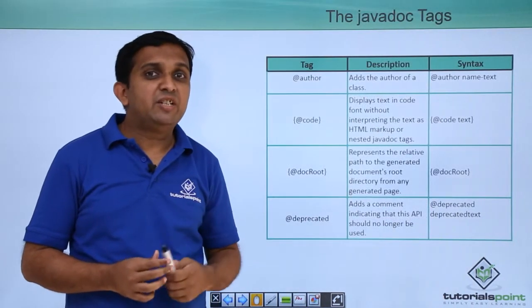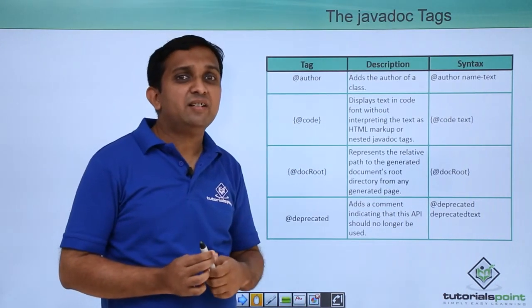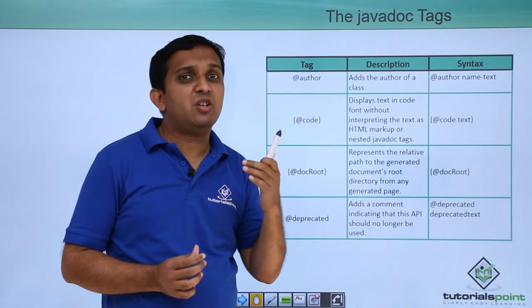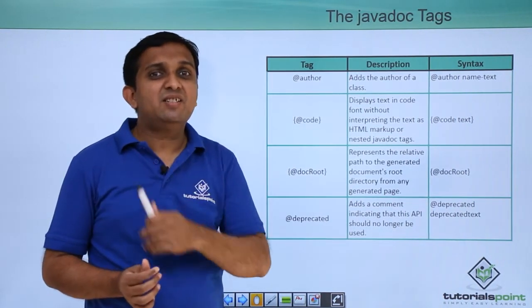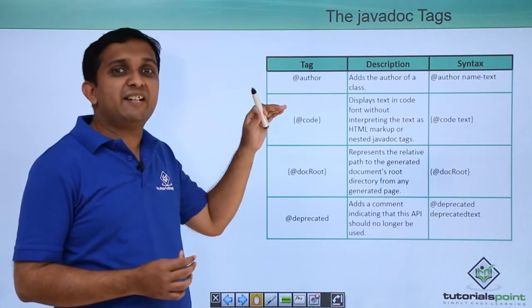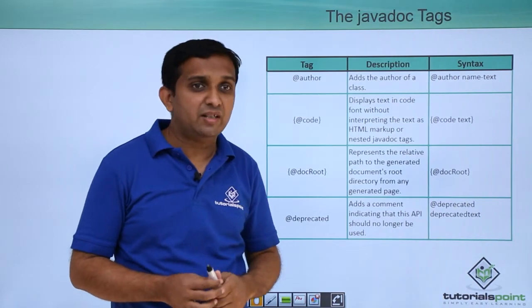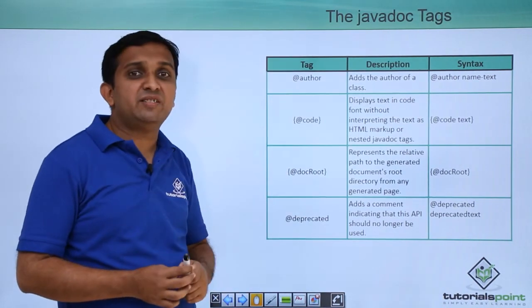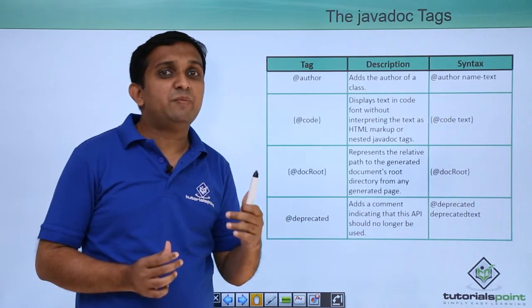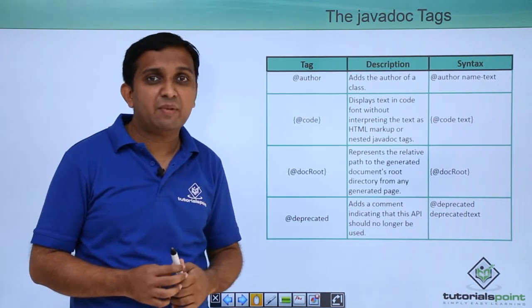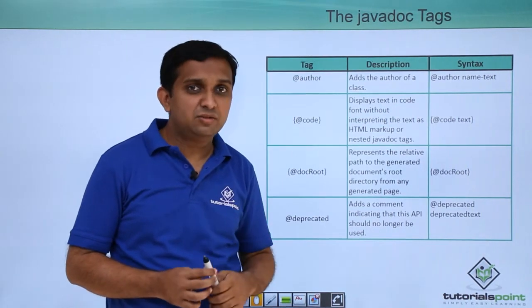Which are the different tags we can use in documentation? @author will give you the name of the author. Whichever name is written in front of that will be placed as an author. Then @code is there, it is used to indicate the code part of the documentation. Then @docroot is there, it will tell you where the corresponding documentation is stored which is created by the javadoc tool. It will give you the relative path of that documentation.